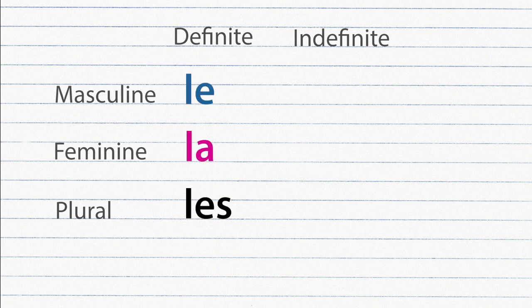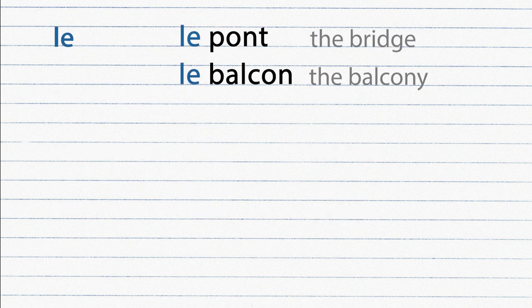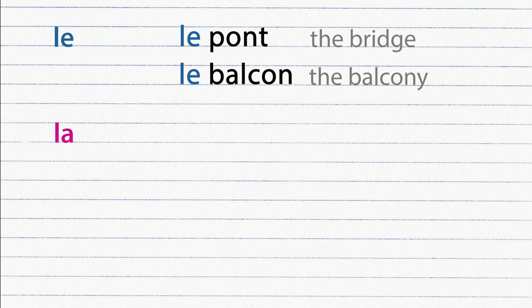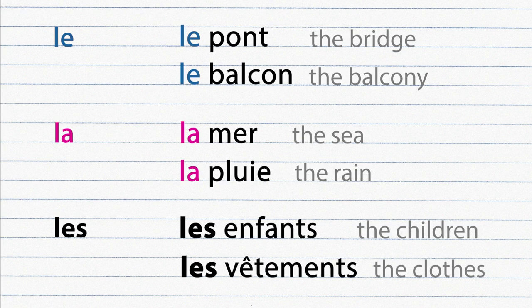Note the plural form is the same for both masculine and feminine. Le, le pont, le balcon. La, la mer, la pluie. Les, les enfants, les vêtements.